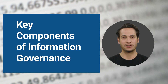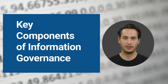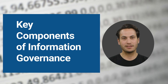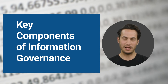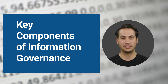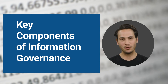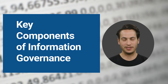To establish an effective information governance program, organizations need to consider several key components. These include policies and procedures, data classification, data lifecycle management, data security and privacy, records management, and data governance. Each component plays a crucial role in ensuring that data is managed in a structured and controlled manner throughout its lifecycle.